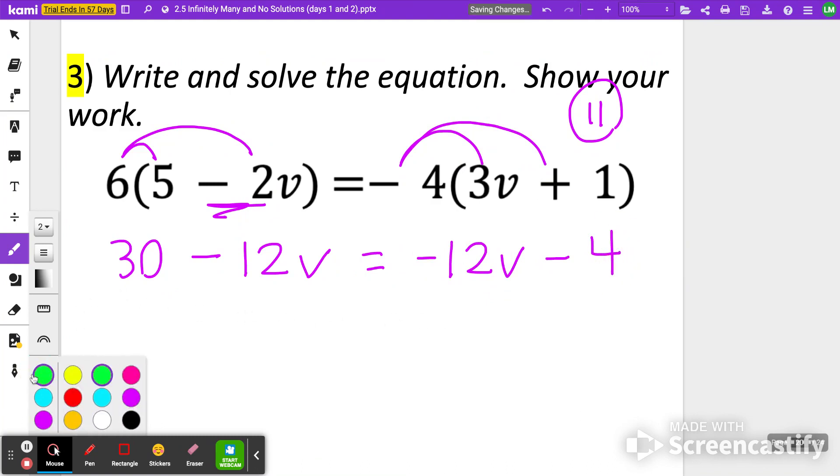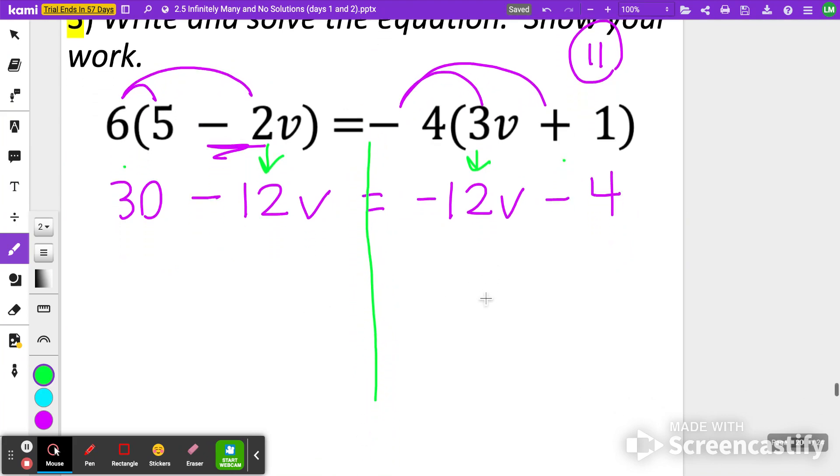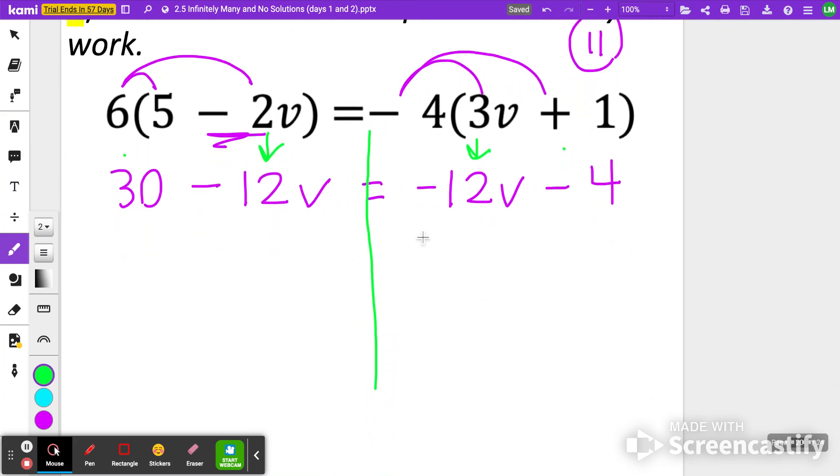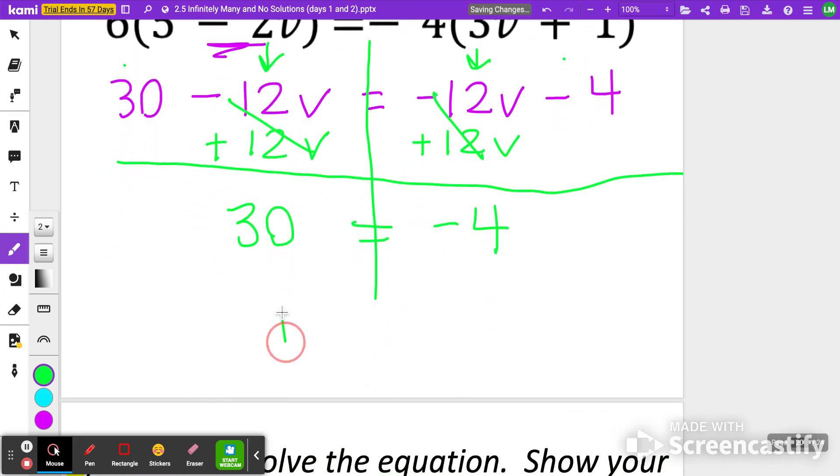You might already understand what to do here because you see you have a negative 12v on the left side and negative 12v on the right side. But on the left, we have a 30 and on the right side, we have a negative 4. So this is probably going to end up being a no solution just because I have two of the things that are correct, but that negative 4 and that 30 are not equal to one another. I'm going to go ahead and add 12v to the left side where those will cross off. So all that's left is 30 on the left and negative 4 on the right. 30 is not equal to negative 4. So this one would be a no solution piece.